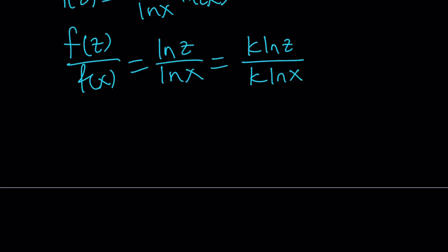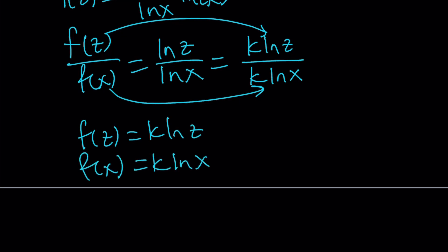But this is cool because this allows us to associate f of z with k ln z and f of x with k ln x, which is something that those imply each other. And this actually works. And this gives us the solution in just a different way.